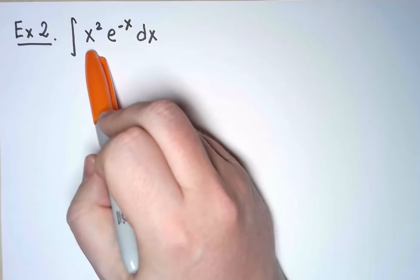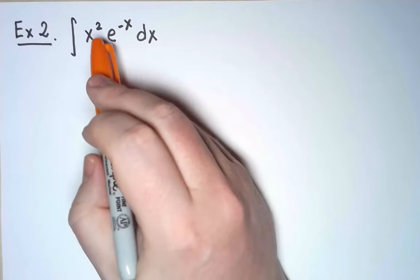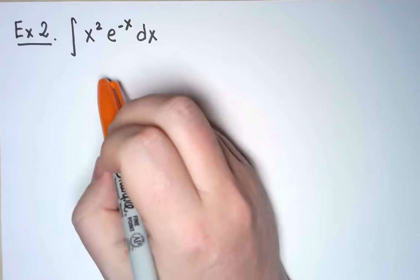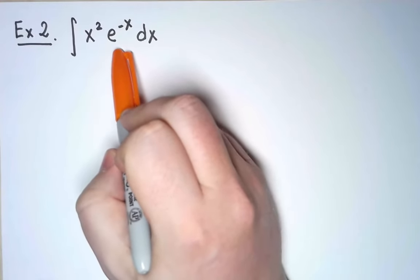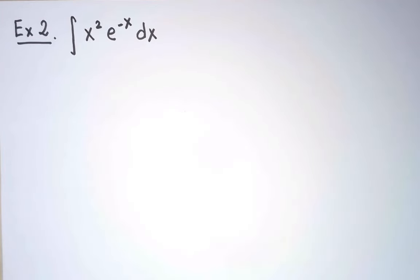The antiderivative is x cubed times a constant, it's harder. So if I want the transformed integral to be simpler, I should take the derivative of x squared and the antiderivative of e to the minus x.